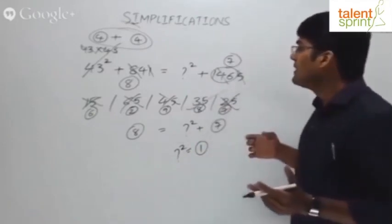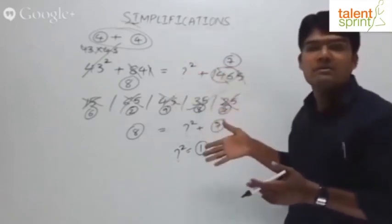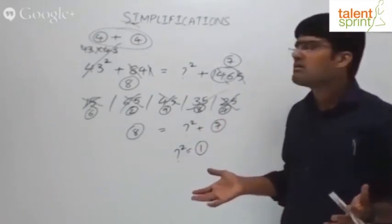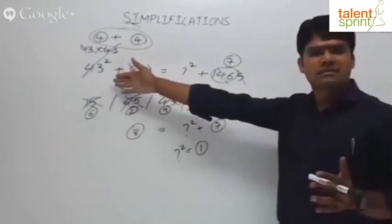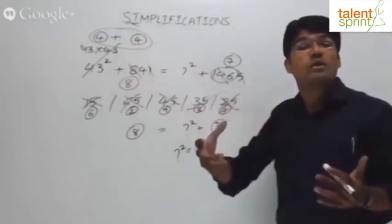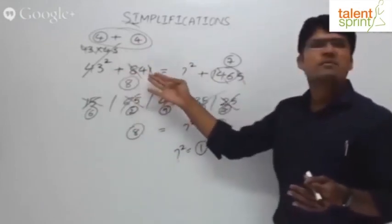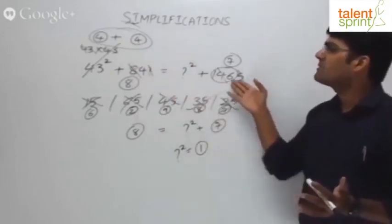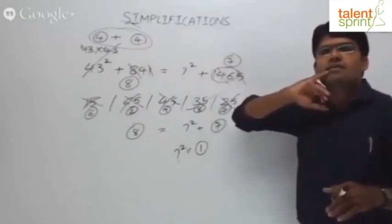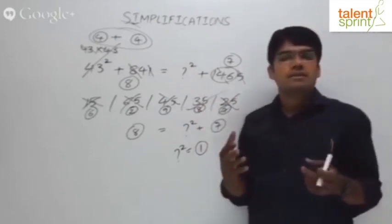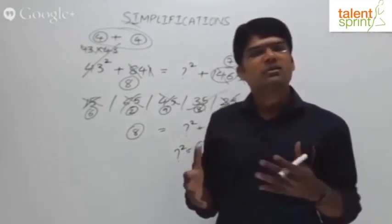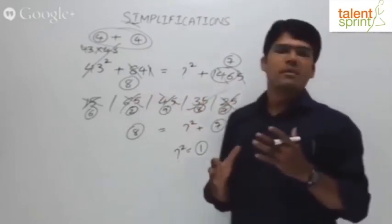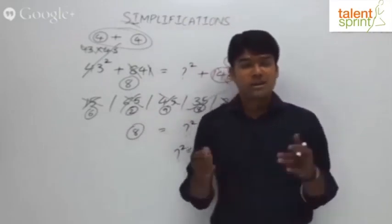That said, it would be better to solve this with the regular procedure. 43 squared is 50 minus 7 whole squared equals 1849. 1849 plus 841 is 2690. Subtract 1465 to get 1225, which is 35 squared. If you're quick at calculations and know speed math concepts, you can answer much faster. But this example demonstrated the application of root-digit method for simplification questions.